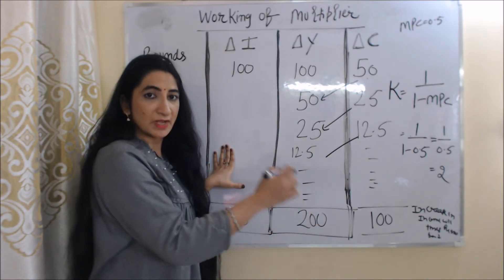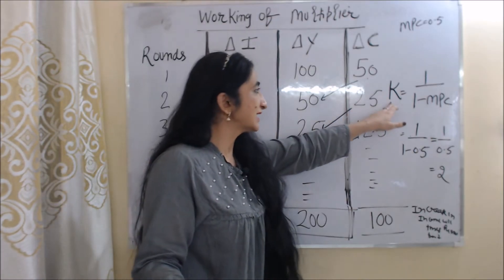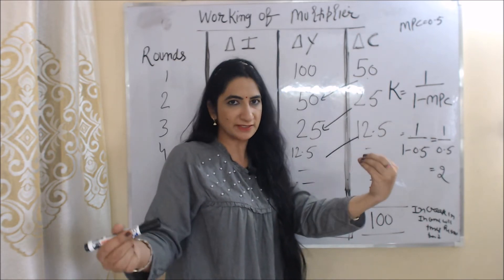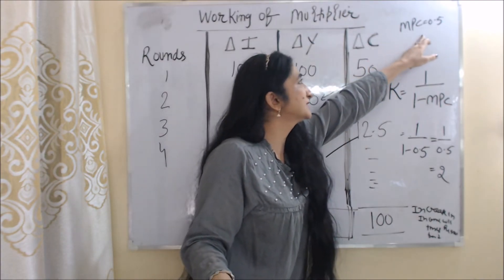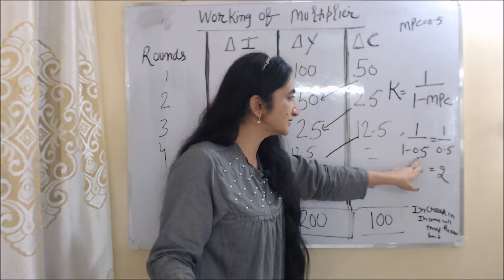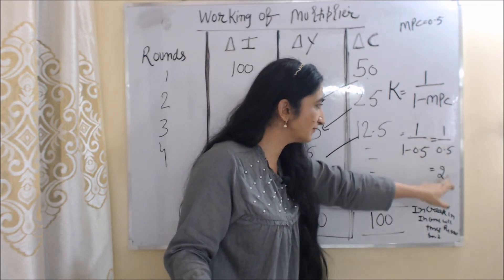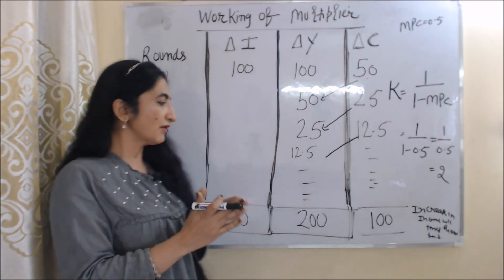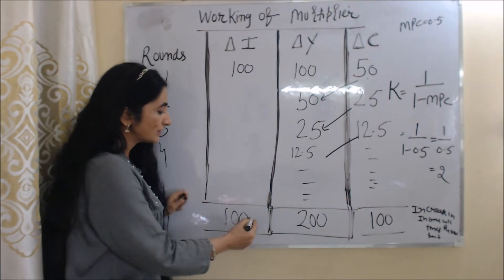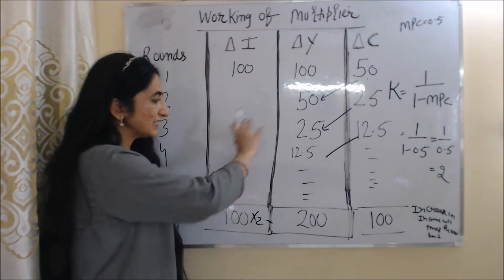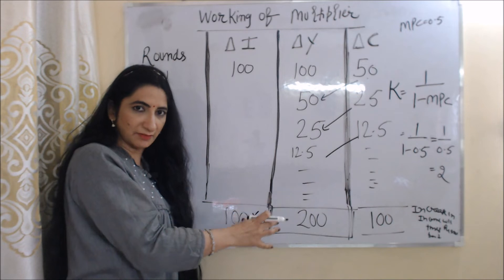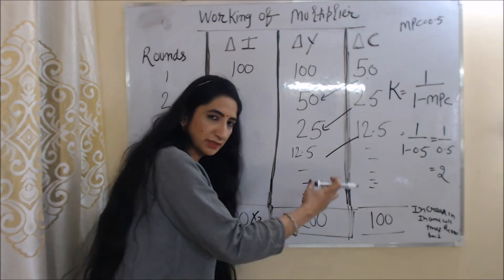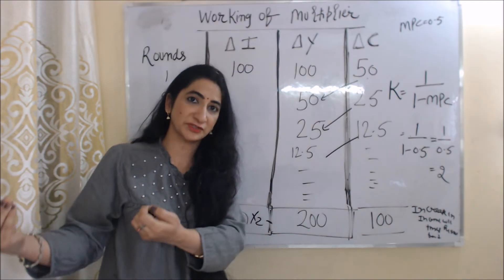For calculating total increase in income, we have another formula: K = 1 / (1 − MPC), where K is the investment multiplier and MPC is marginal propensity to consume. With MPC = 0.5, we get 1 / (1 − 0.5) = 1 / 0.5 = 2. So the multiplier value is 2, meaning income will be 2 times higher than investment. Our initial investment was 100 crore, so 100 × 2 = 200 crore total increase in income.